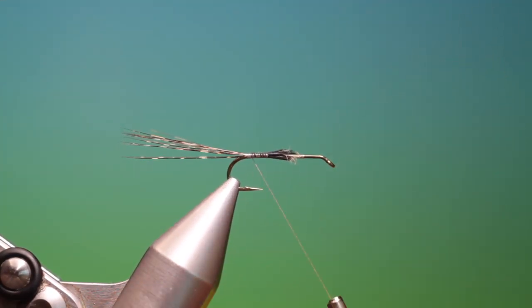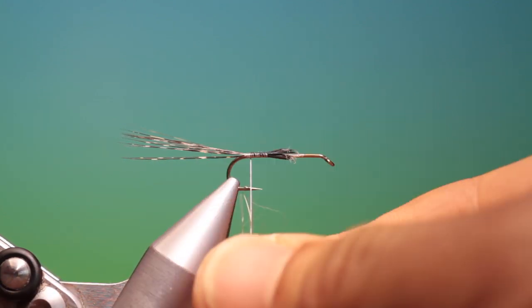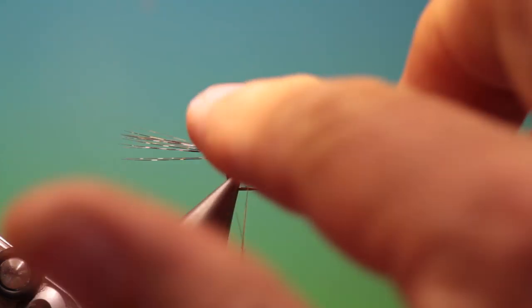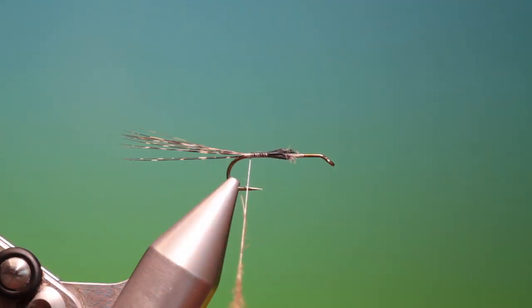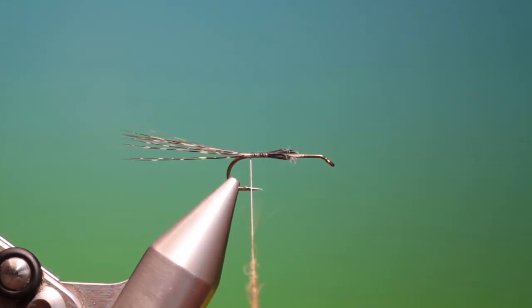Then we take a bunch of our dubbing. And we just start, we want this to be tapered from thin at the tail base to thicker towards the thorax.